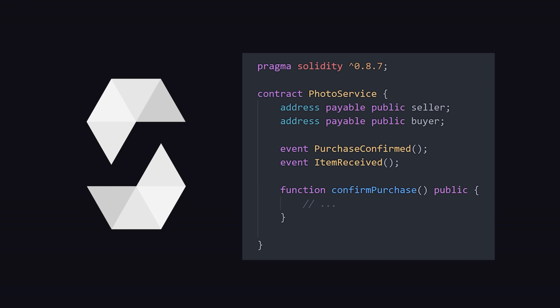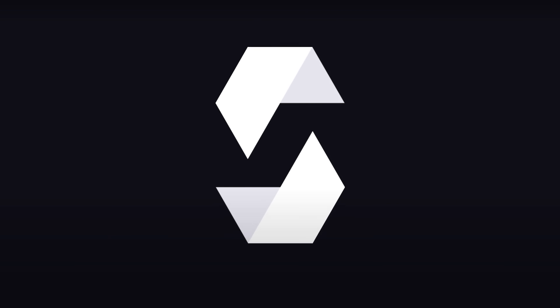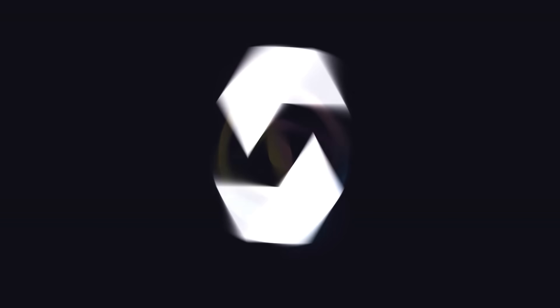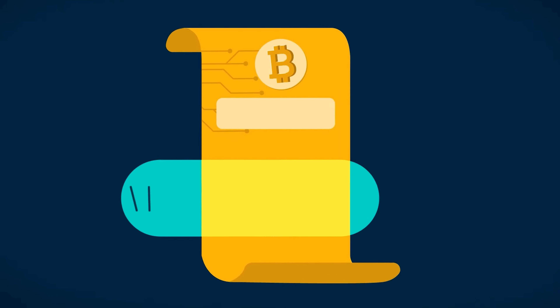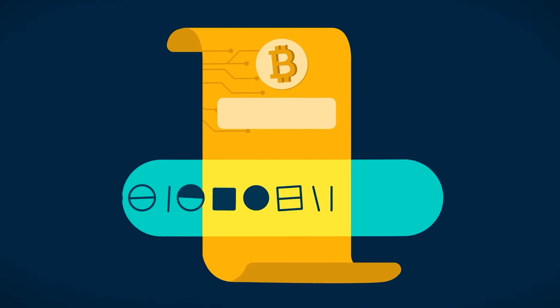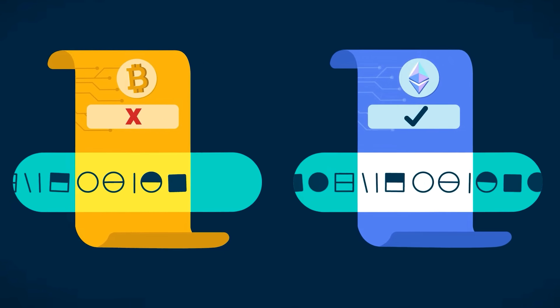First up on our list is Solidity. This is a high-level, object-oriented language created by the folks at the Ethereum Foundation, so you can write smart contracts for the Ethereum platform. In plain terms, smart contracts are automated deals and agreements that run without middlemen. You probably already know all this, but it's still pretty cool, right?